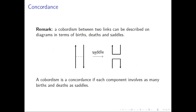A cobordism between two links can be described on diagrams in terms of birth, death, and saddle moves. A birth is the creation of a trivial component, a death is the deletion of such a component, and a saddle consists in fusing two components or separating a component into two. A cobordism is a concordance if and only if each component involves as many births and deaths as saddles. This can be seen by computing the Euler characteristic of the underlying surface, as each birth or death increases it by one and each saddle decreases it by one.